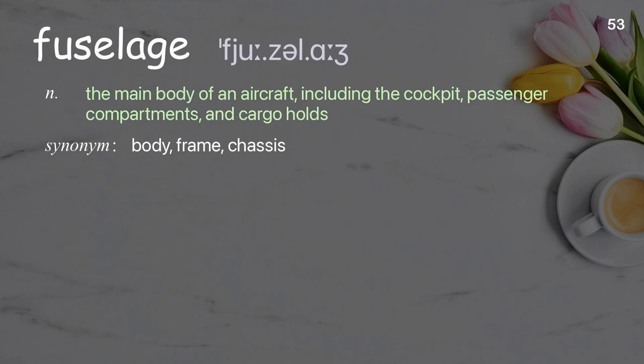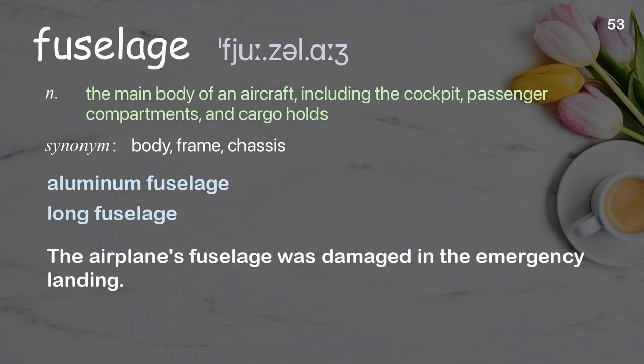Fuselage. The main body of an aircraft, including the cockpit, passenger compartments, and cargo holds. Examples: aluminum fuselage, long fuselage. The airplane's fuselage was damaged in the emergency landing.